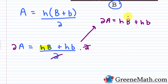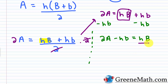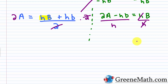Now I want to isolate the term with uppercase B. I subtract H times lowercase b from each side of the equation. Then to get uppercase B by itself, I divide both sides by H. So uppercase B equals 2A minus H times lowercase b, all over H.